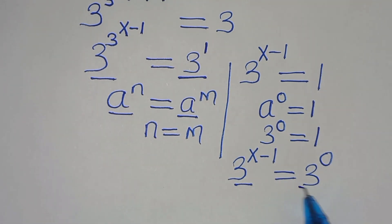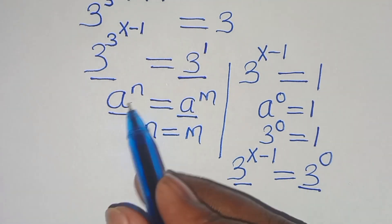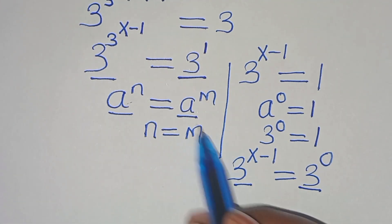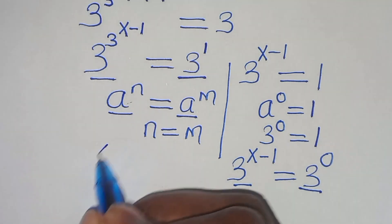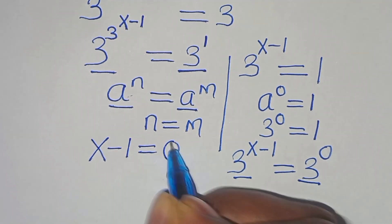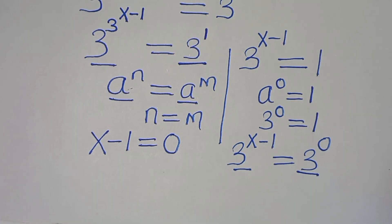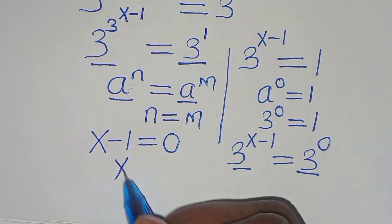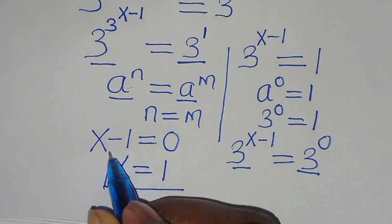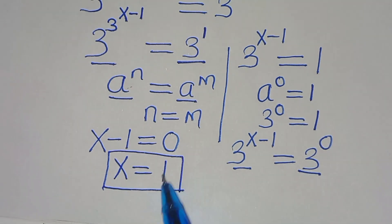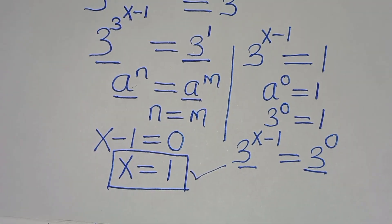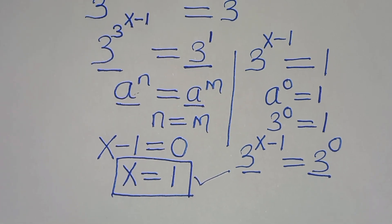Since the bases are common, applying the exponent property — exponent n equals m — this implies x minus 1 equals 0, and therefore x equals 1. The next step is to verify that this value of x satisfies the equation.